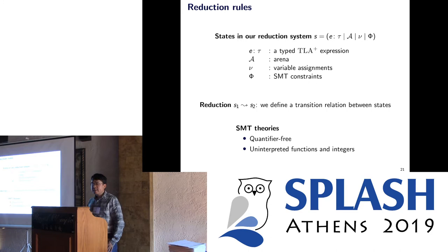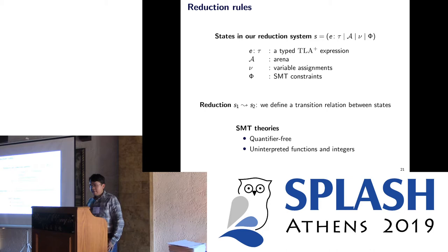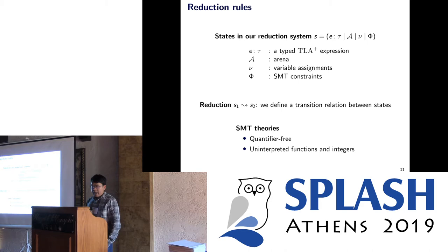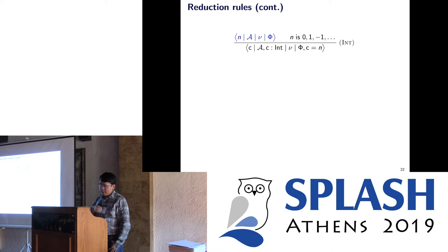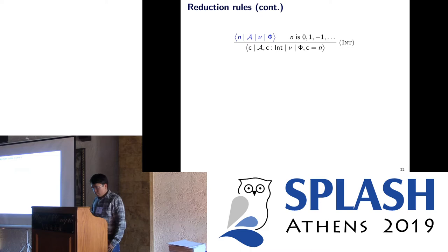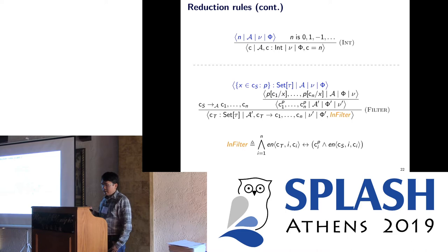Our reduction system is a state system where every state has four elements: a type, a TLA+ expression, an arena, variable assignments, and SMT constraints. The SMT theories we use in our encoding are the quantifier-free fragment, uninterpreted functions, and integers — that's all. Here are the reduction rules. There is a simple rule for replacing an integer with a constant, and a more complicated rule for set filtering, which is exactly the rule used in the previous example.